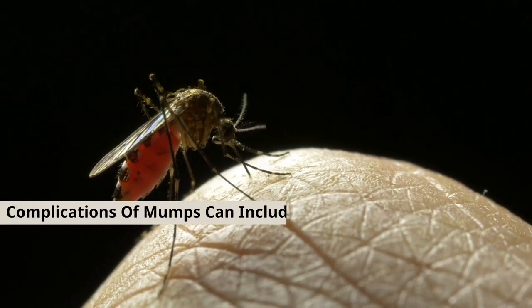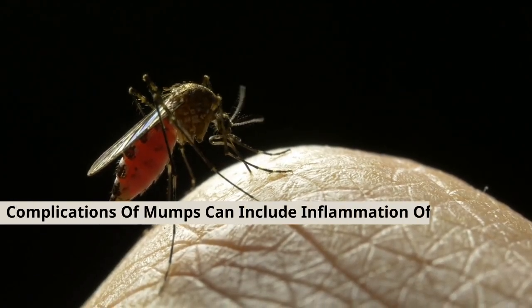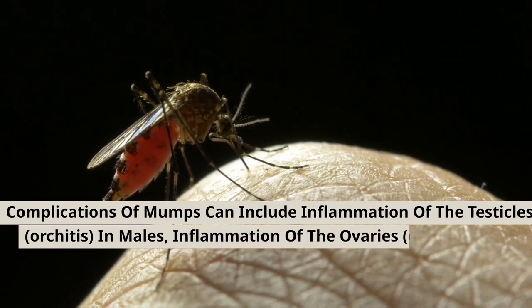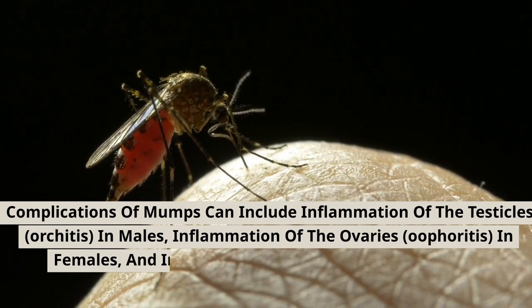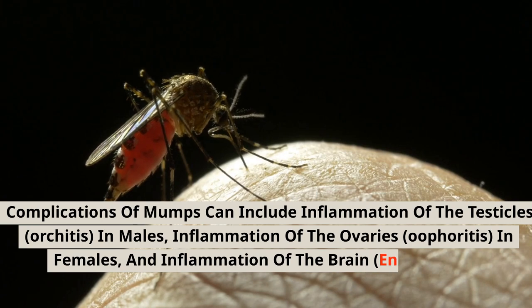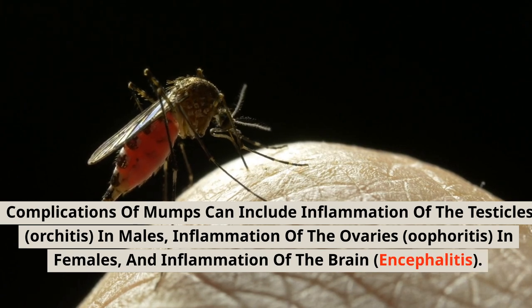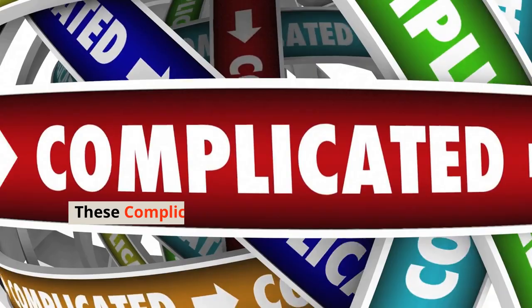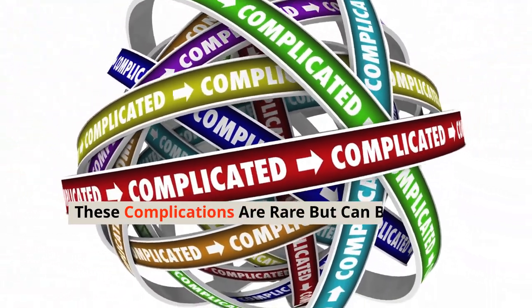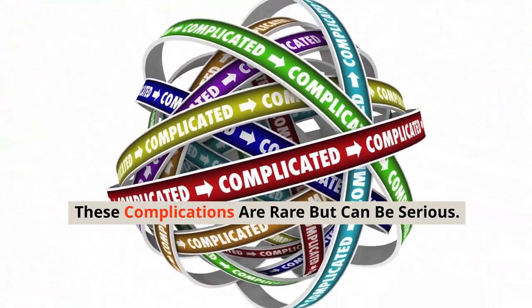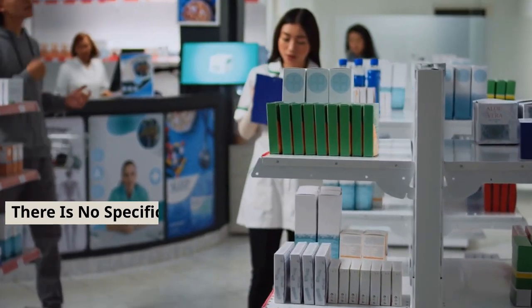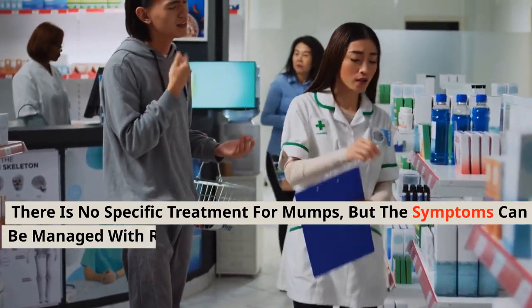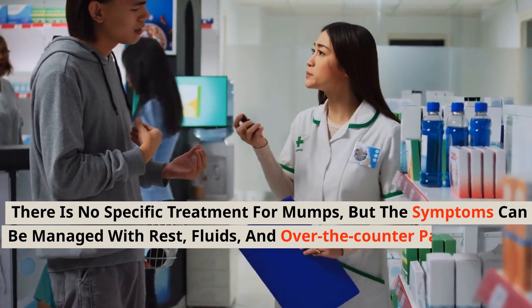Complications of mumps can include inflammation of the testicles, orchitis, in males, inflammation of the ovaries, oophoritis, in females, and inflammation of the brain, encephalitis. These complications are rare but can be serious. There is no specific treatment for mumps, but the symptoms can be managed with rest, fluids, and over-the-counter pain relievers.